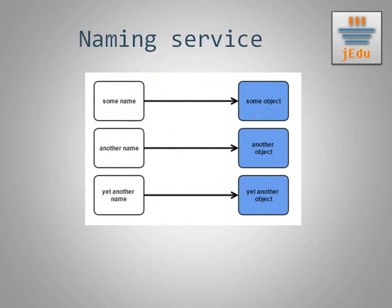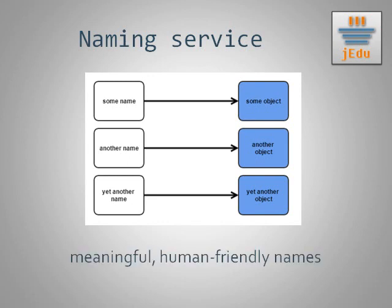Let's start with naming service. The concept is very simple: naming service allows you to look up — and also manage — different kinds of objects by supplying a name. In general it doesn't have to be the object itself; sometimes it may be a reference — not a Java reference, but rather general information about how to access the object. In the end, as a result of a lookup operation, we receive a ready-to-use object. The main benefit is that naming service gives you a meaningful name easily understood by humans instead of a bare low-level reference. A classic example you know for sure is DNS.